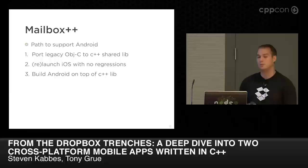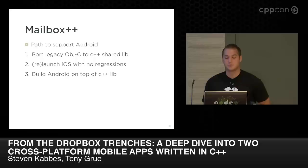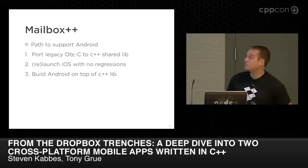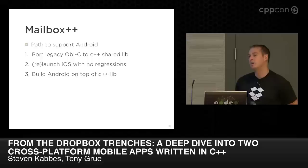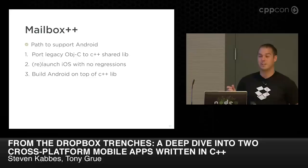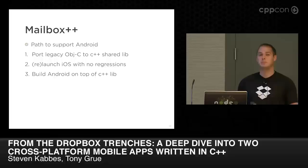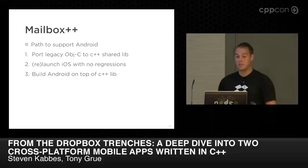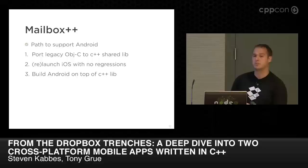The second goal — relaunching iOS with no regressions — is a little counter-intuitive but makes a ton of sense. For anyone who has launched software to users with even a small bug or regression, an angry mob of users is one of the scariest things you can go up against. They don't care how clean your abstractions are or that you hot-swapped 50,000 lines of Objective-C for C++. They just want their app to work the same as it did yesterday. That was actually one of the major goals. And the last thing was obvious: build Android on top of the shared C++ library. Andrew and Alex on Thursday will be going deeper into this, not only Android but cross-platform mobile in general.